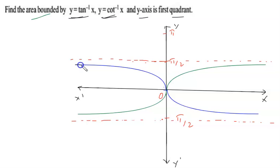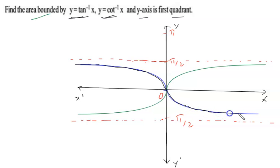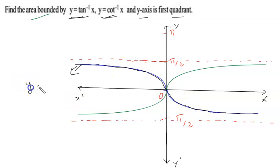The cot⁻¹x graph looks like this — at π/2 it is not defined, and at −π/2 it is also not defined. This blue line denotes y = cot⁻¹x, and this green line denotes y = tan⁻¹x.